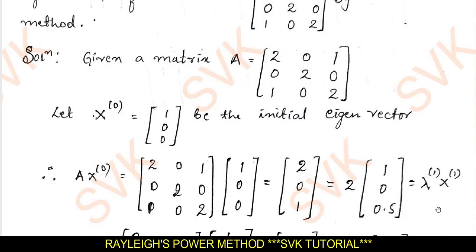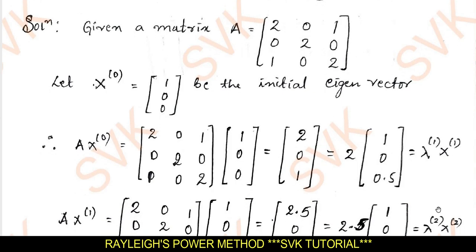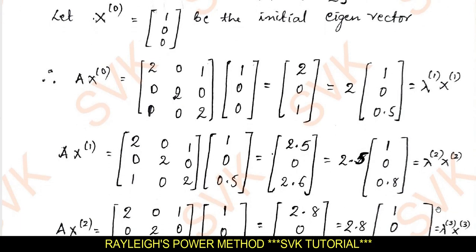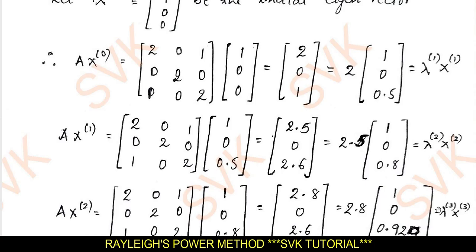Similarly, following this iteration, we are going to find the next approximation. For that, I am going to fix 3 decimal places minimum, or you can go with 5 decimals. Next, I continue the procedure by finding Ax₁ — that is, multiplying the given matrix A by whatever eigenvector you got in the previous step. Out of the resulting values, 2.5 is the largest value. Dividing this matrix by 2.5, we get the new matrix [1, 0.8]. I name 2.5 as the largest eigenvalue and this as the corresponding eigenvector.